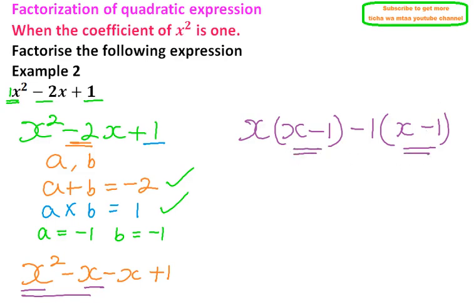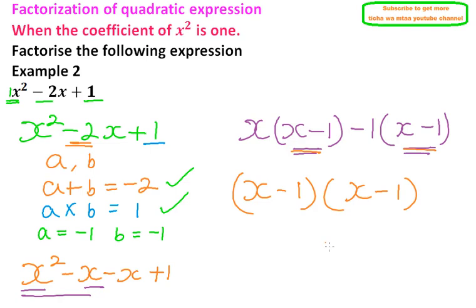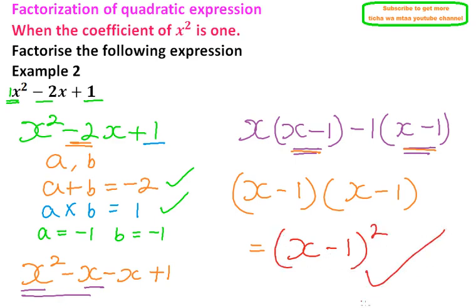Now that what is inside both brackets is the same, we can factor again. We factor out x minus 1, which is common in both terms, giving x minus 1 times x minus 1. Since both factors are the same, we can write this as x minus 1 squared. That is how you factorize this quadratic expression.